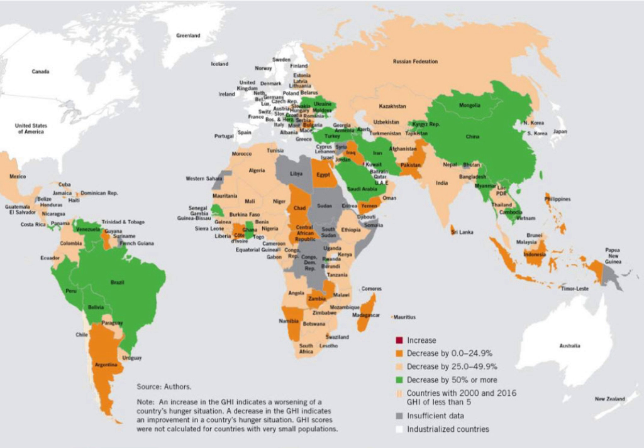Yet this progress has been uneven, and great disparities in hunger continue to exist at the regional, national, and subnational levels. The 2016 GHI emphasizes that the regions, countries, and populations most vulnerable to hunger and undernutrition have to be identified so improvement can be targeted there, if the world community wants to seriously meet Sustainable Development Goal 2 on ending hunger and achieving food security.